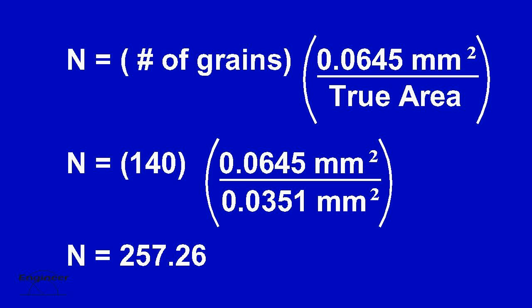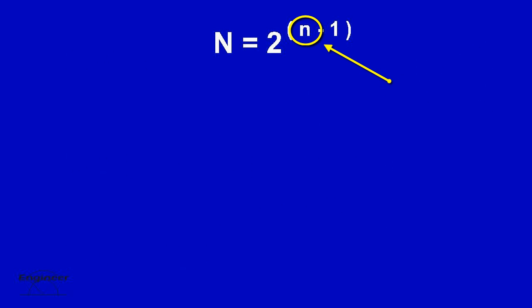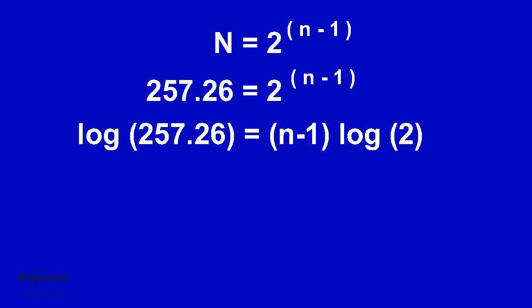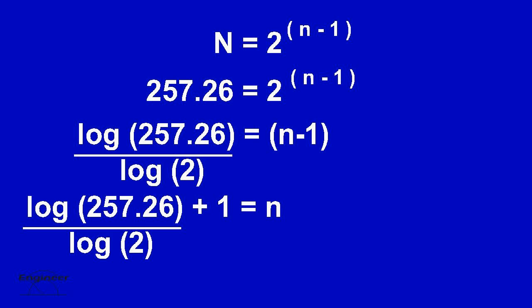Now that we have a value for big N, we can plug it into the other equation to solve for little n. The grain size number is the little n. In order to bring the unknown little n down from the exponent, we must log both sides. This is our grain size number. We now have completed part 2.